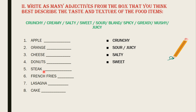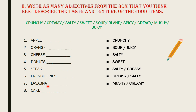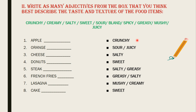And what about steak? Salty, and you can also describe it as greasy. And how about french fries? Greasy, salty, and you can also use crunchy. And what about lasagna? Mushy and creamy, and sometimes spicy. And what about cake? Sweet, and also crunchy, mushy, or greasy. All these kinds of food descriptions are alternatives — it's what you're thinking.